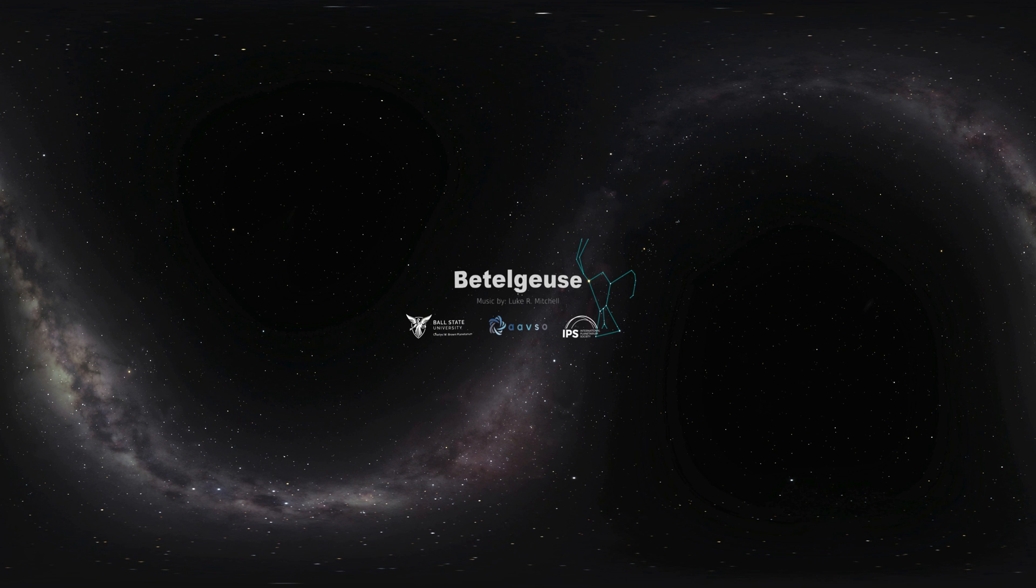This variable star episode is brought to you by Ball State University, the International Planetarium Society, and the American Association of Variable Star Observers, an international consortium of amateur and professional astronomers. For more information on variable stars and how to observe them, visit their website at aavso.org.